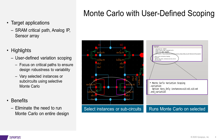User-defined scoping allows users to use variation blocks to select instances or sub-circuits for multi-corner analysis, eliminating the need to run multi-corner analysis on the entire design. This feature requires no design netlist changes.